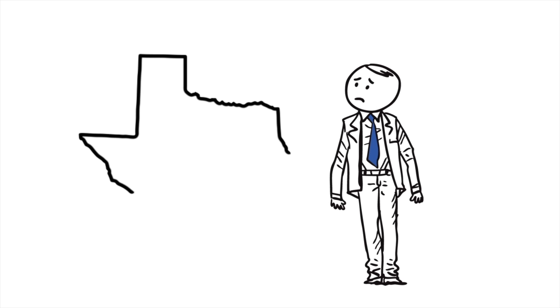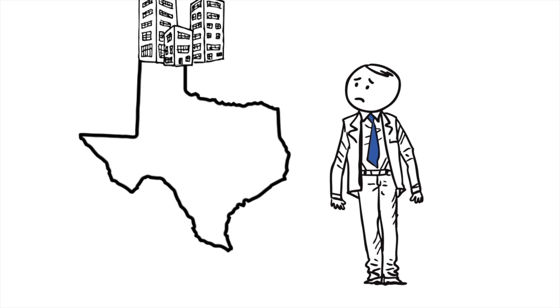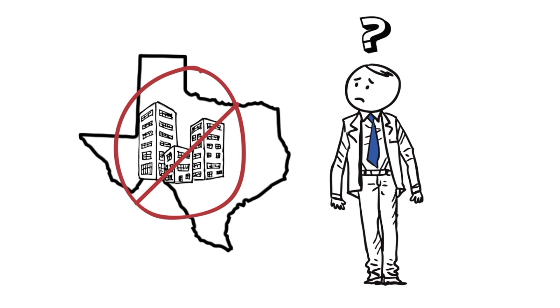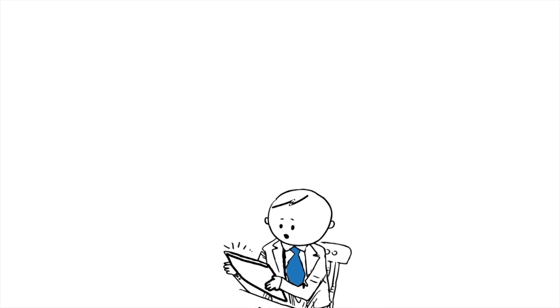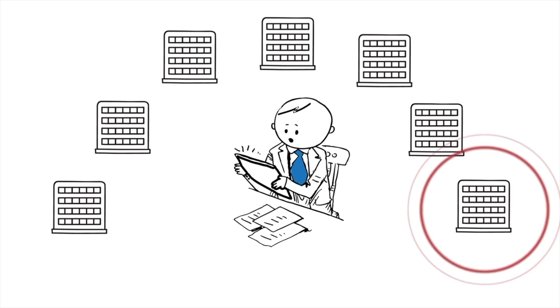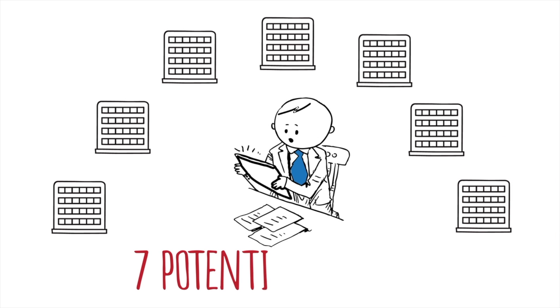Bob finds out his current vendor doesn't provide service in one of the new locations. He doesn't know who operates in Dallas. So Bob researches it for two weeks and finds seven potential vendors. Seven potential vendors. And time is running out.